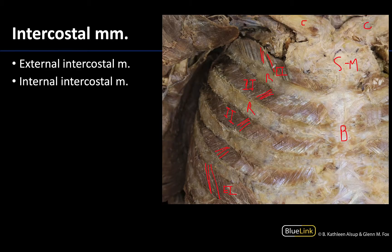If you remember, the externals run in this inferior medial direction — that will help with the external obliques of the abdominal wall. And the same thing for the internal intercostals and the internal oblique muscles of the abdominal wall: they're running in a similar direction.